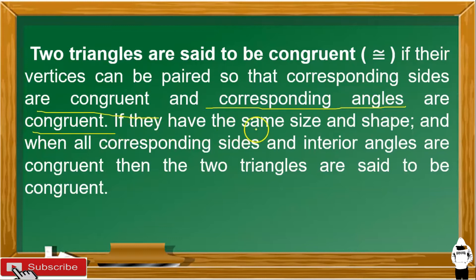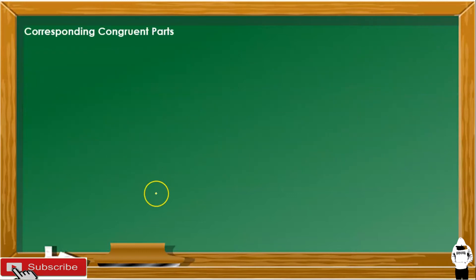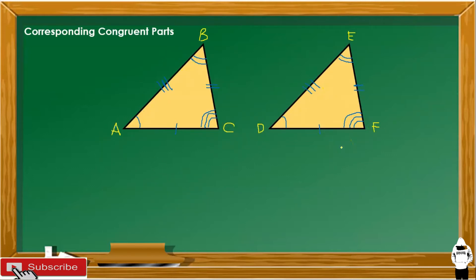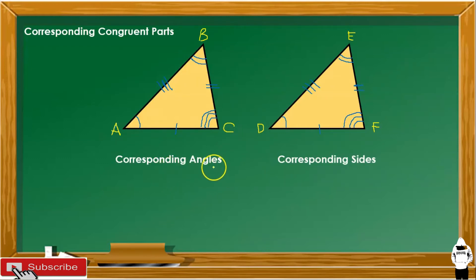If they have the same size and shape, and when all corresponding sides and interior angles are congruent, then the two triangles are said to be congruent. Let us consider these two triangles, triangle ABC and triangle DEF. We are going to find the corresponding angles and corresponding sides.